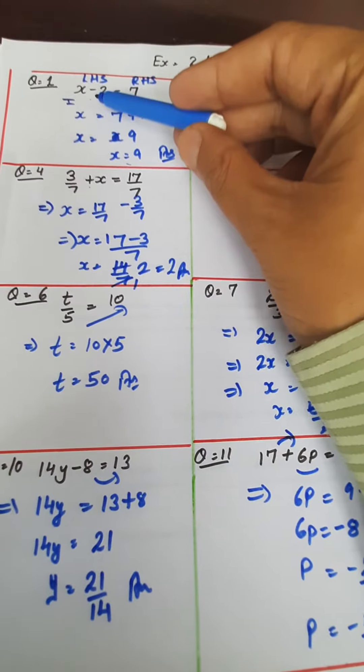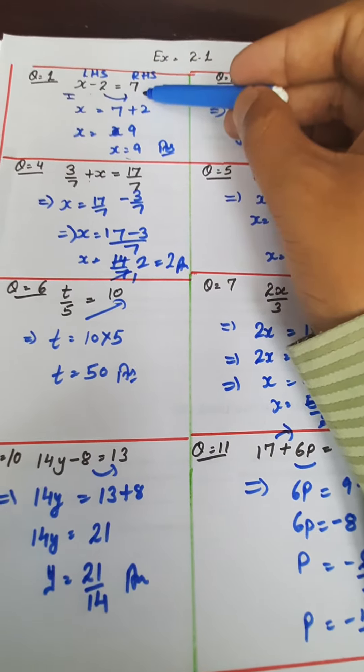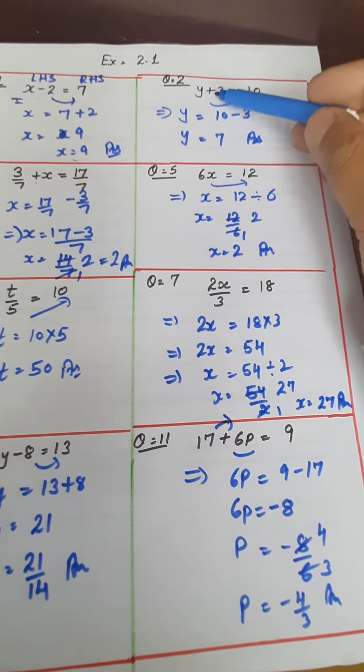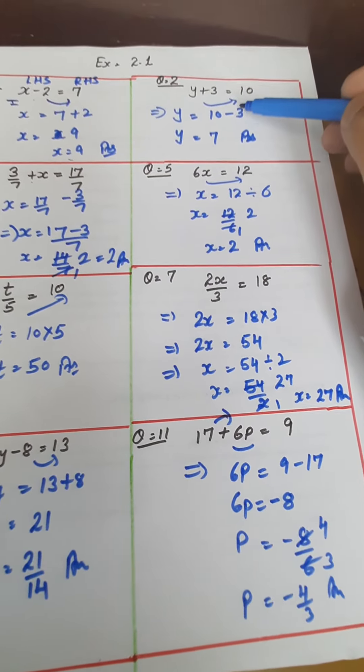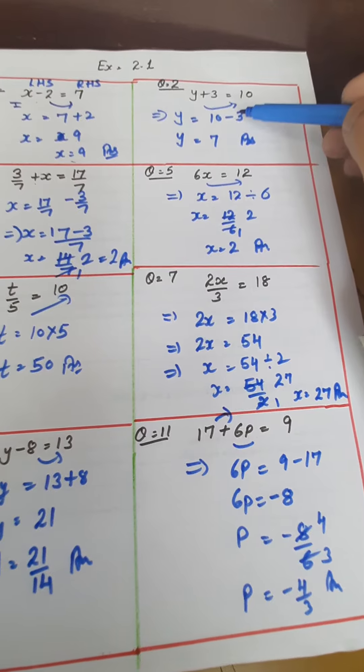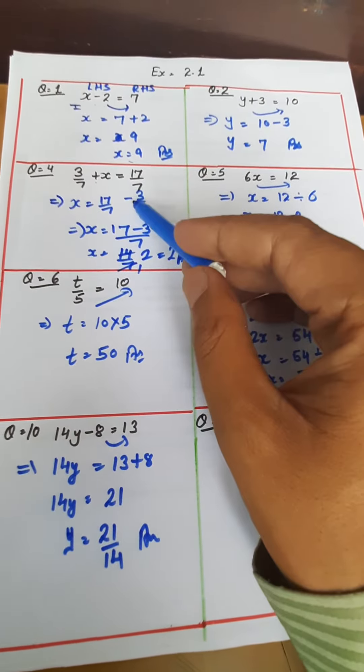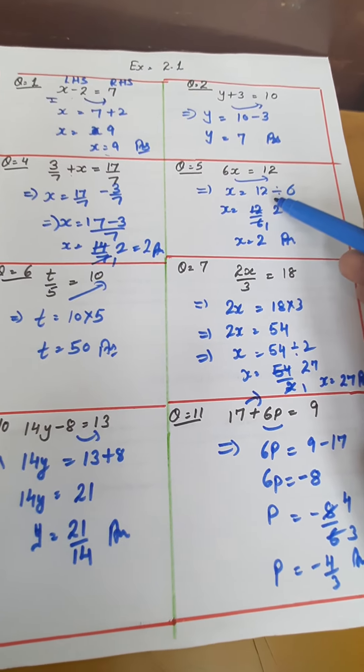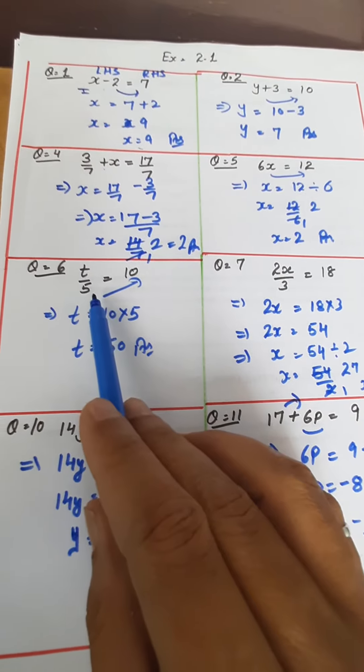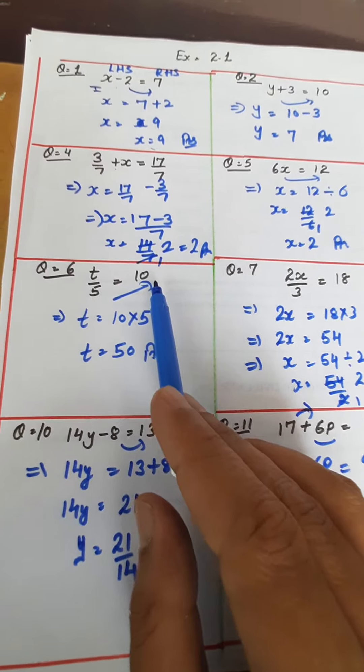How? Minus will be transposed - the sign will be plus. Plus will be transposed - in constant term sign will be minus. Plus will change into minus, and multiply into divide. And divide will be into the multiplied.